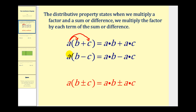Similarly, if we have a times the quantity b minus c, we'll multiply the a and the b and also multiply the a and the c. So we'll have a times b minus a times c.